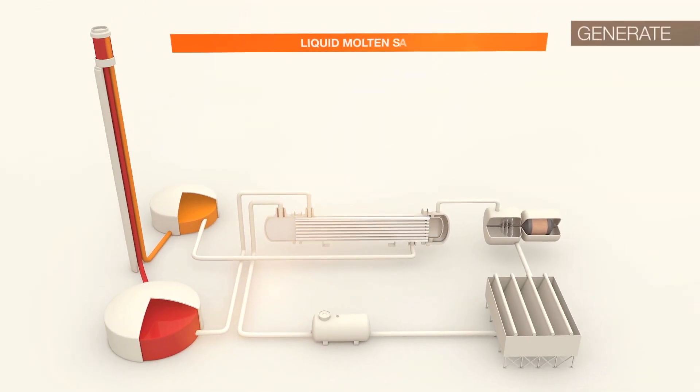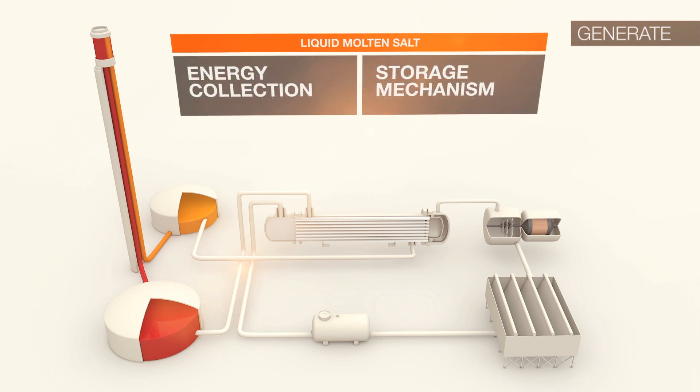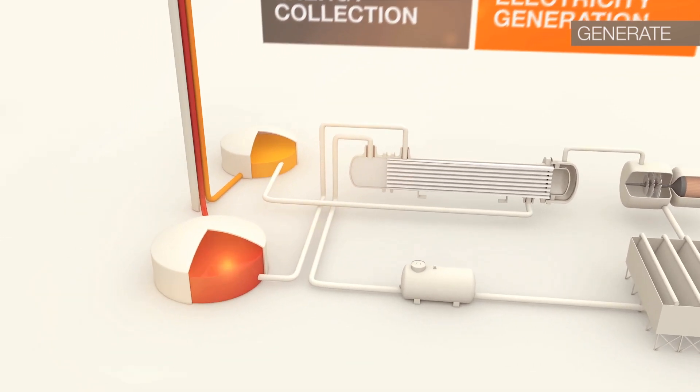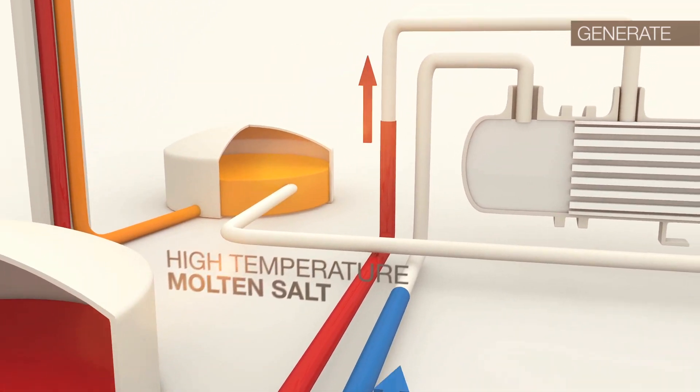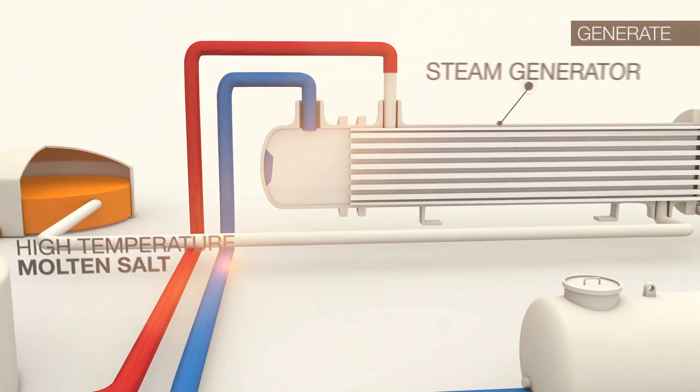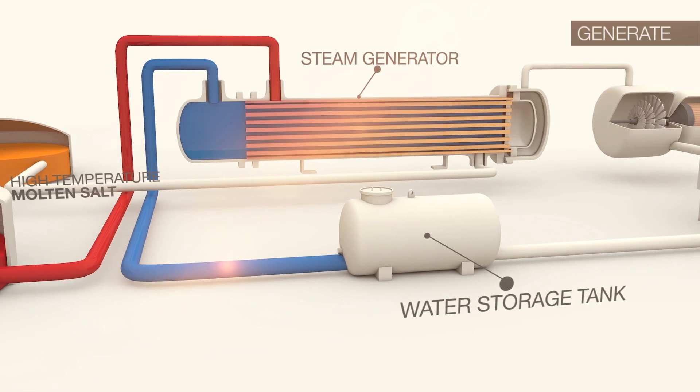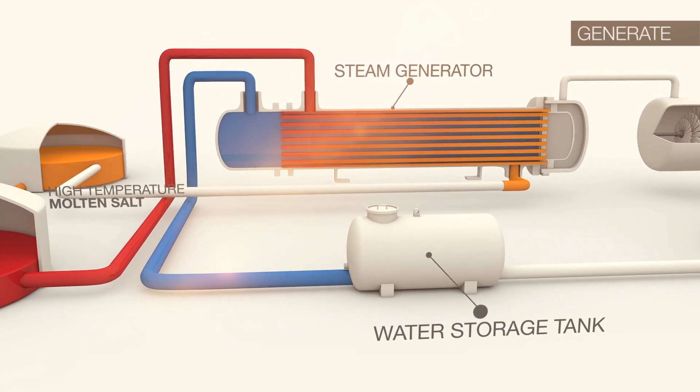Solar Reserve's technology leverages liquid molten salt as both the energy collection and the storage mechanism, which allows it to separate energy collection from electricity generation. When electricity is required by the customer, day or night, the high temperature molten salt flows into the steam generator as water is piped in from the water storage tank to generate steam.